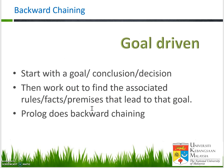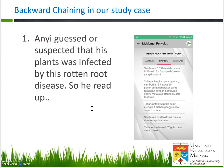How about backward chaining? We start with the goal or conclusion — whatever has been decided — and then we work backwards to find the associated rules that led to that conclusion. Prolog also does backward chaining. Back to Ani: Ani guessed or suspected that his plant was infected by rotten root disease, perhaps his friend told him. So he read up about rotten root disease ('reput akar') and wants to double-check whether this is correct before buying pesticides.